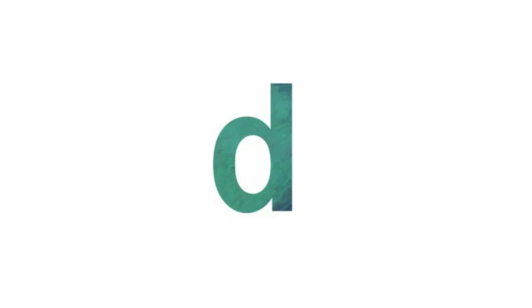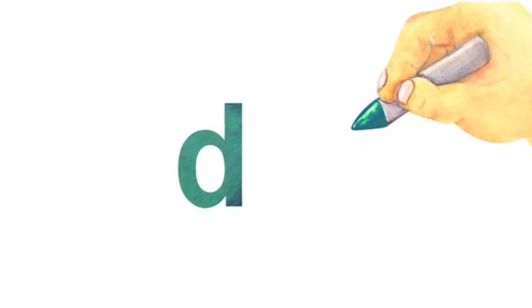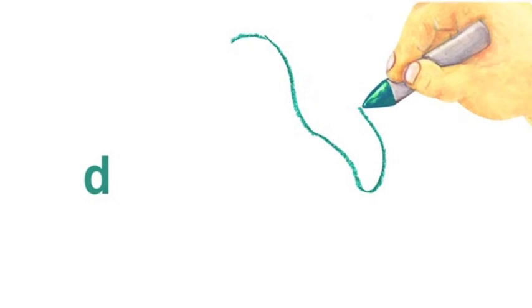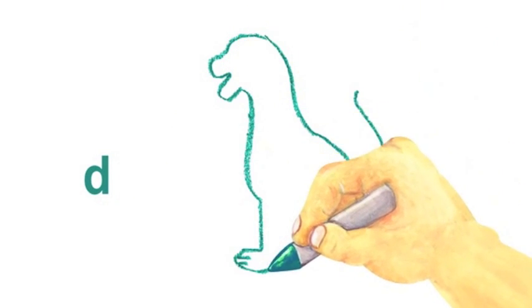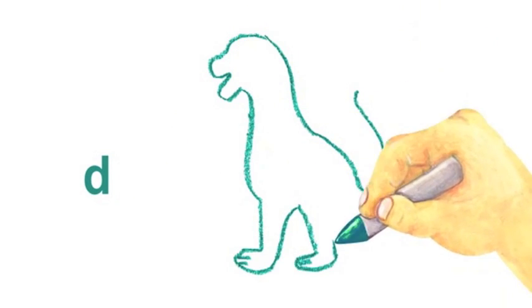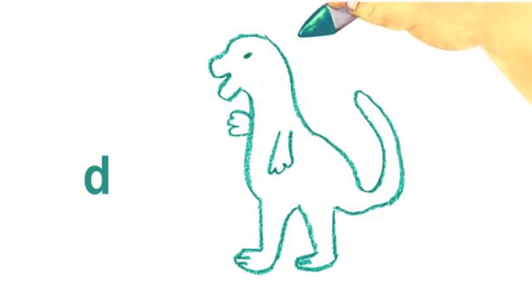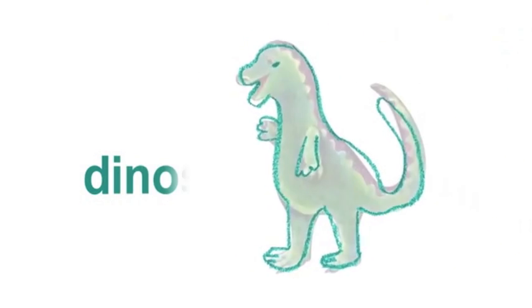Next comes the letter D. D — Let's draw some animals with names starting with D. What is this? This is a dinosaur.